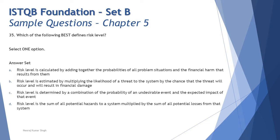Option B says: the risk level is estimated by multiplying the likelihood of the threat to the system by the chance that the threat will occur and will result in financial damage. Again, financial damage is not always the only problem, and they're only talking about likelihood, not impact. Moreover, it is not a multiplication of these factors.